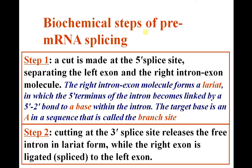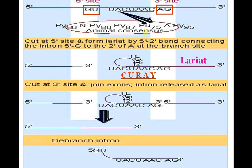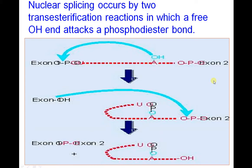Step 2: cutting at the 5' splice site releases the free intron lariat, and the right exon is ligated to the left exon. This is the whole lariat structure. The introns are removed and exons are joined in the nucleus.